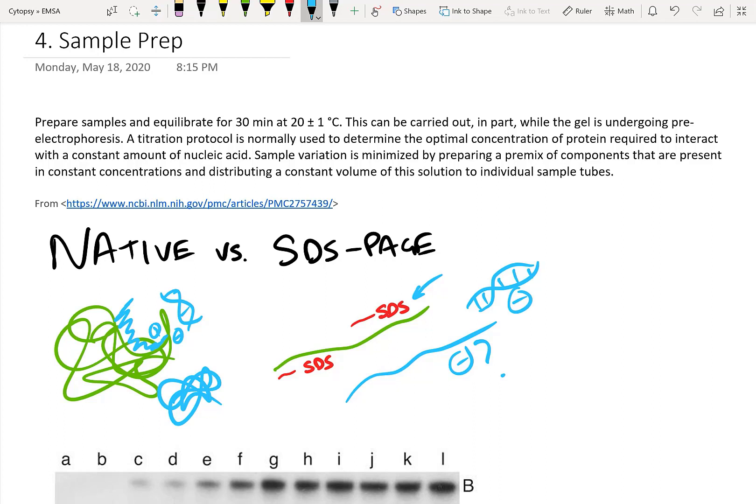Now that we've covered native PAGE versus SDS-PAGE, I'd like to talk about what these guys say we should do, which is a titration protocol. We're going to have DNA interacting with protein. In order for that to happen, there needs to be enough DNA in solution and enough protein in solution. But if you add too much protein, maybe the protein aggregates. If you add too little protein, maybe it just doesn't interact with the DNA. You don't see anything. So that's why you have to run a titration.